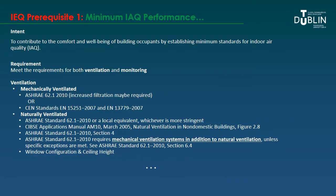The first prerequisite looks at minimum performance and has two requirements. First, you need to establish minimum standards covering both ventilation and monitoring of the building. For ventilation, whether mechanically or naturally ventilated, there are different ASHRAE standards that must be met, along with CEN standards for mechanically ventilated buildings. This also applies to mixed mode systems — the mechanical standards apply when mechanical ventilation is activated and the natural standards when it is deactivated.